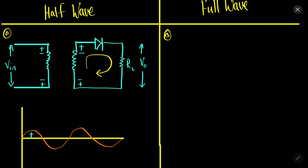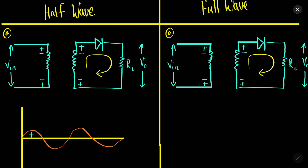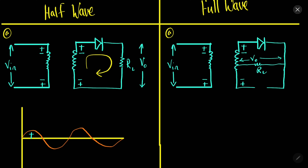Now let us discuss the full-wave rectifier. It is quite similar to the half-wave rectifier, the only difference being that there will be two diodes. We will have another diode added to the circuit and obtain the output from a different location — across the load resistance RL.